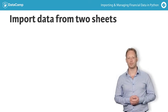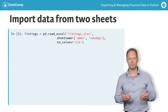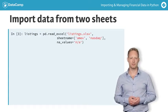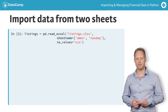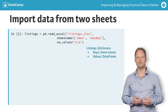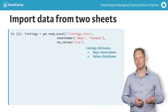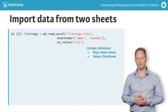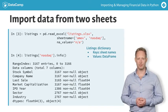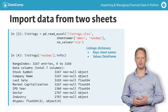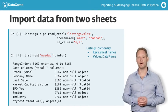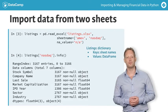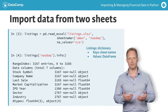Let's now import data from two worksheets. Just apply a list with the labels AMEX and NASDAQ to the sheet_name parameter. The result, contained in the variable listings, is a dictionary that contains two key-value pairs. The keys contain the names of the worksheets and the values are the corresponding data frames. Since listings is a dictionary, you can access the data frame with the NASDAQ data by providing the matching key. Once you apply the .info method to the result, you can view the structure of the data about the listings on this stock exchange.